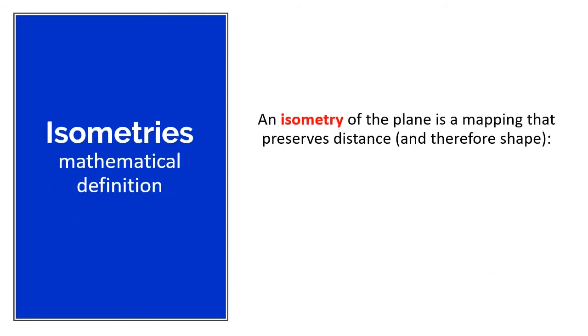This is the mathematical definition of an isometry. It is a mapping that preserves distance and, of course, therefore, the shape. The distance, if you have two points x and y, their distance in the original figure is the same as the distance in the second figure, in their image. x and y, these are the original points and then f of x and f of y, they are the images.